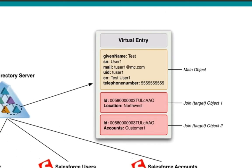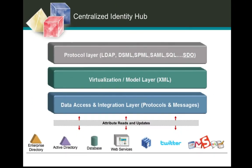Your entry within the virtual directory then shows data coming from all three sources without the applications having to know how to query them directly. In essence, what we've created is a centralized identity hub for accessing information about your users — not only from your internal sources such as your directories, databases, and web services, but also from sources out in the cloud, such as Salesforce, Twitter, LinkedIn, and other cloud services, all without having to make changes to your applications.